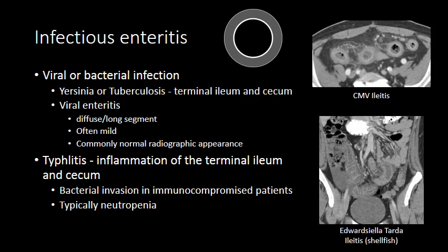Infectious enteritis is another common form of small bowel inflammation, often characterized by mural stratification similar to Crohn's disease, but the affected segments are typically continuous and long segment, as opposed to multiple short discontinuous segments as seen in Crohn's disease. Both viral and bacterial causes exist. Classic bacterial etiologies include Yersinia and tuberculosis, which selectively involve the terminal ileum and cecum. Viral enteritis tends to be more diffuse or long segment, often mild, and many times will have no apparent radiographic manifestation.